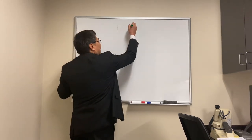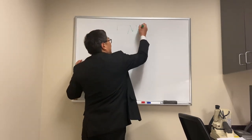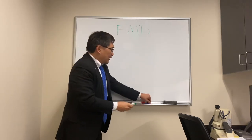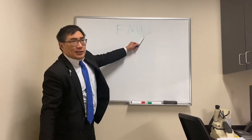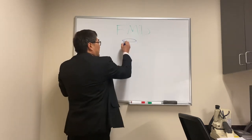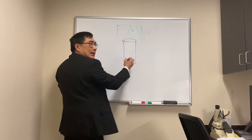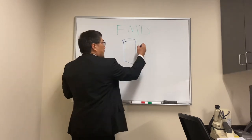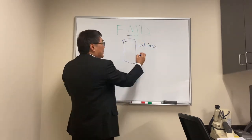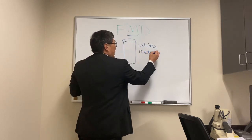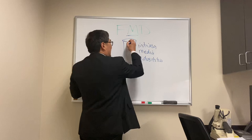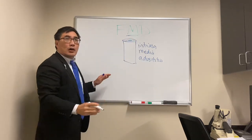Today we're going to be talking about fibromuscular dysplasia. As the name implies, it's a dysplasia of the fibromuscular layer of the artery, which can be inside the artery in the intima, can involve muscular dysplasia of the media, and can also involve the adventitia — the layers of the arterial wall.